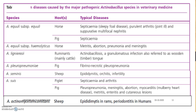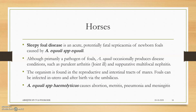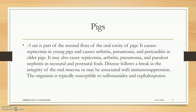The main Actinobacillus species causing disease: in horses they cause sleepy foal disease and may cause abortion, metritis, pneumonia, and meningitis. In pigs, they mainly cause pneumonia, pericarditis, and swollen nephritis.